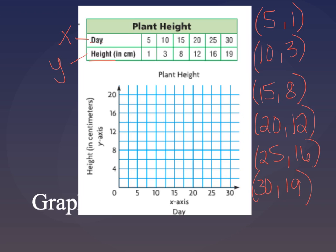Alright, so now that I have all of my ordered pairs, I'm now going to plot these on the grid. Alright, so I'm going to take my ordered pairs here. First of all I have 5, 1. I'm going to go over to the 5 and up to the 1, that's going to be about right here.